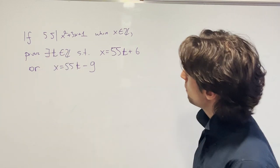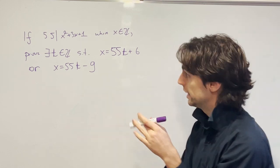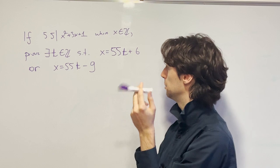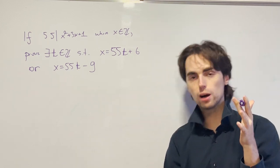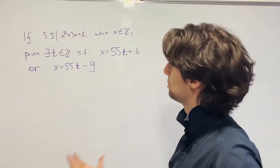If 55 divides x squared plus 3x plus 1, where x is an integer, prove that there exists an integer t such that x is 55 times t plus 6, or x is 55 times t minus 9.